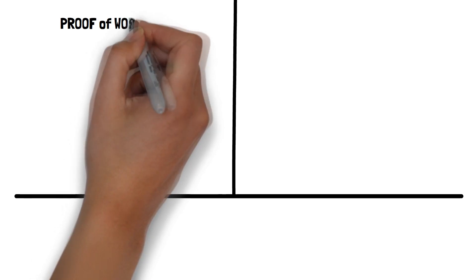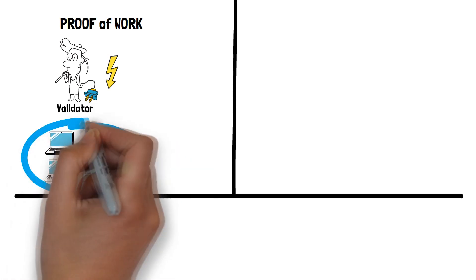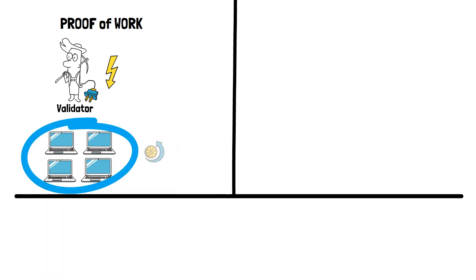In proof of work, we have a miner who uses computers, electricity, and other resources to validate transactions and mint cryptocurrency. With more computers, miners validate more transactions and mint more crypto tokens.